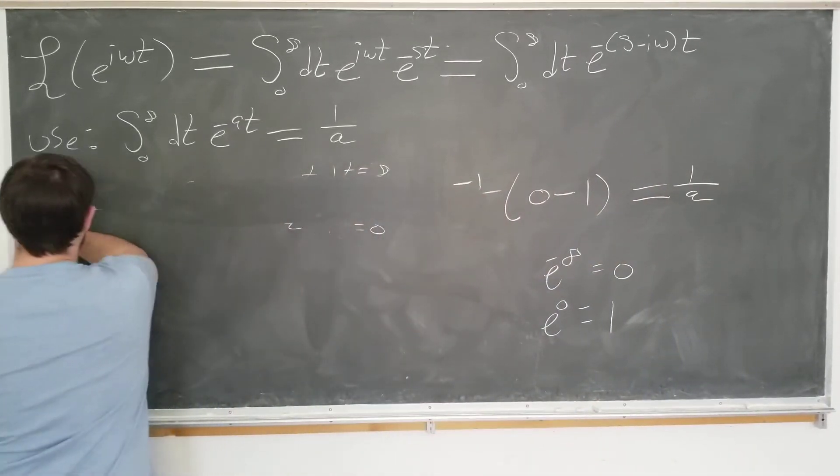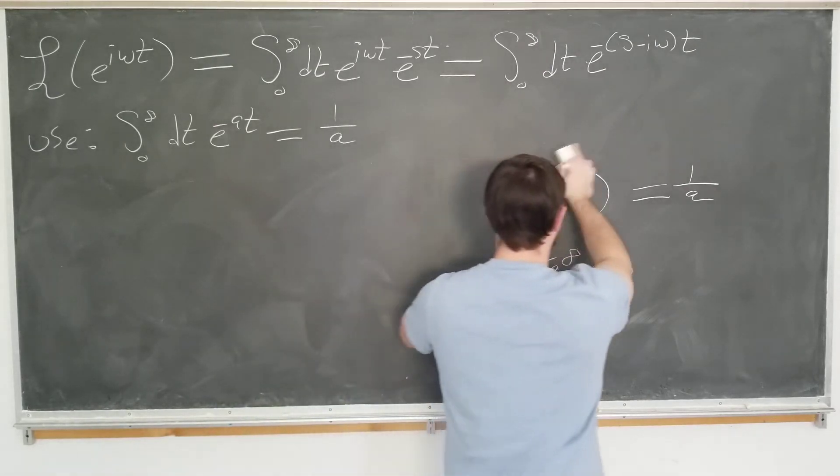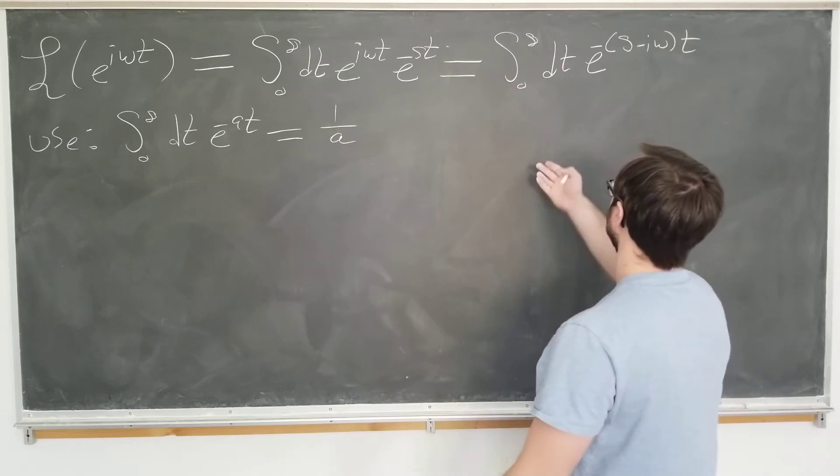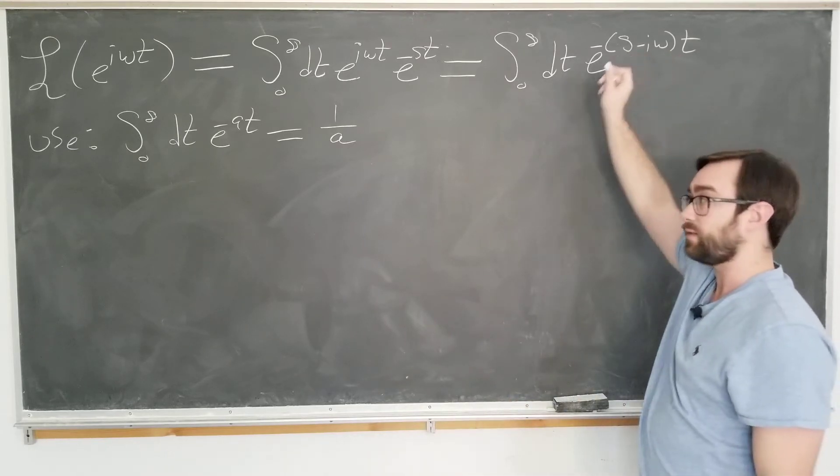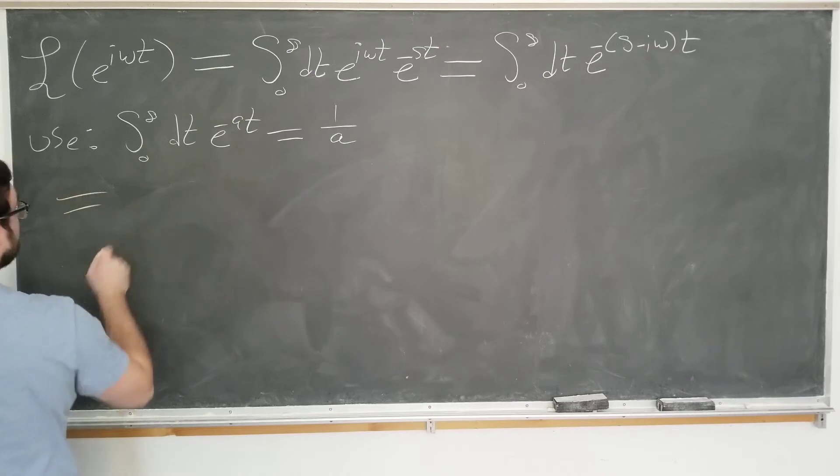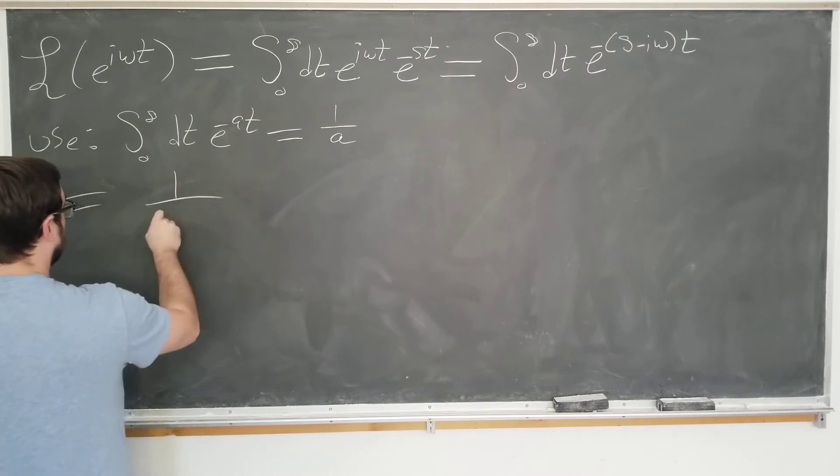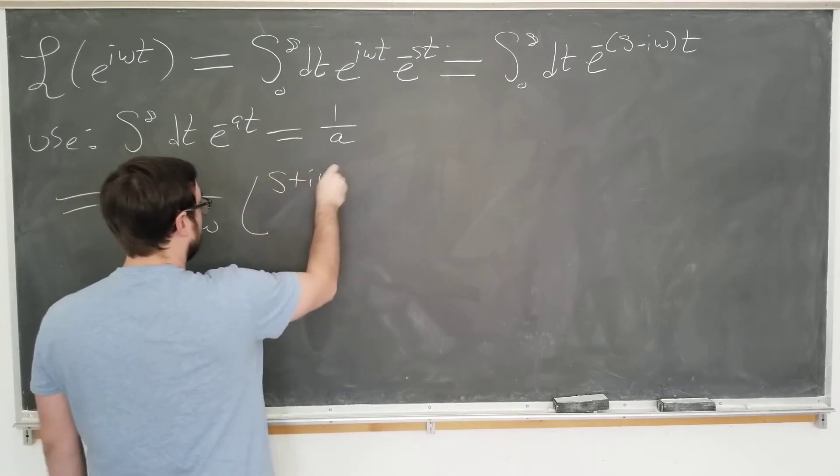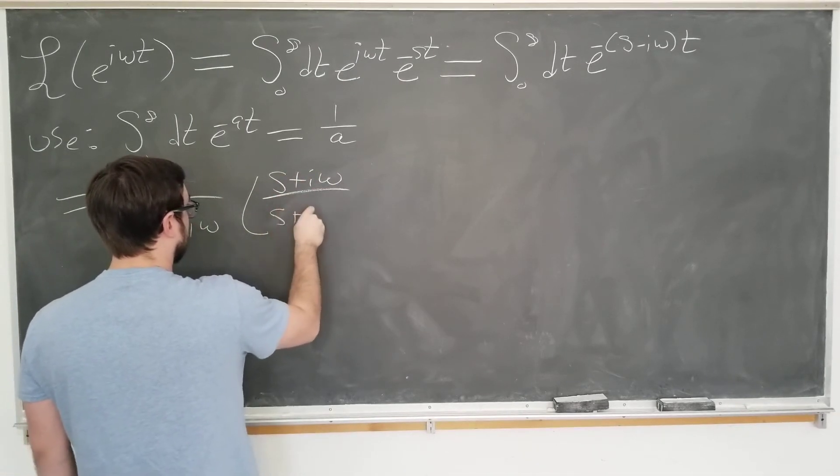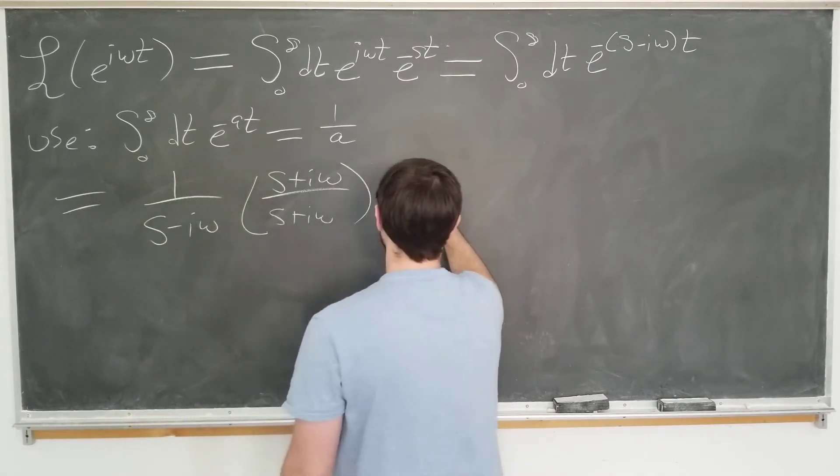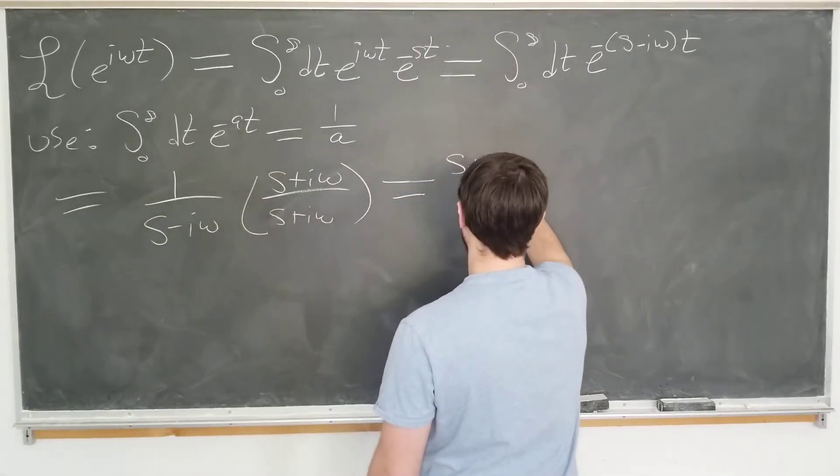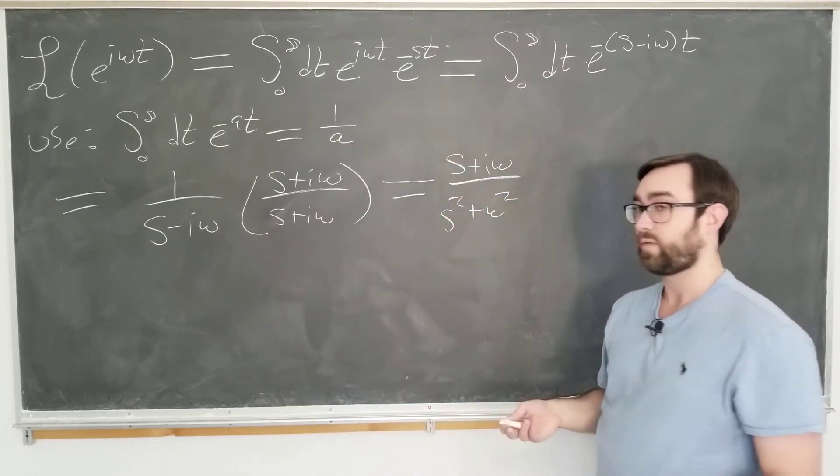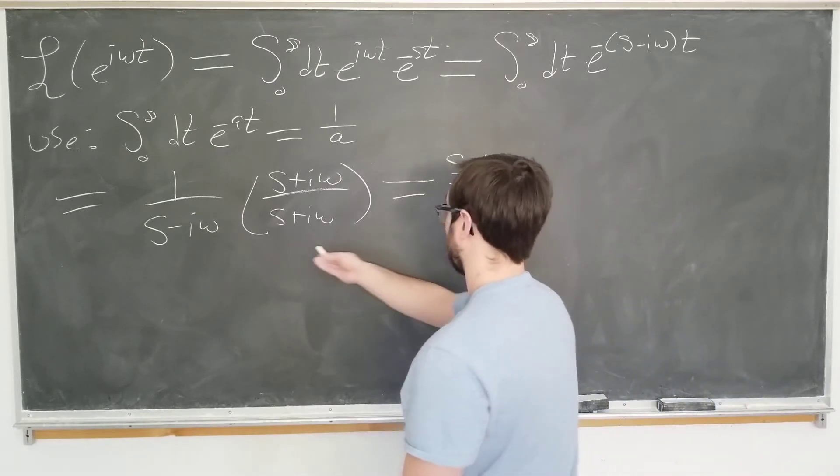So this integral just becomes 1 over the constant. So the whole Laplace transform is just 1 over s minus i omega, which upon multiplying numerator and denominator by the complex conjugate becomes s plus i omega over s squared plus omega squared, where of course we use the identity here.